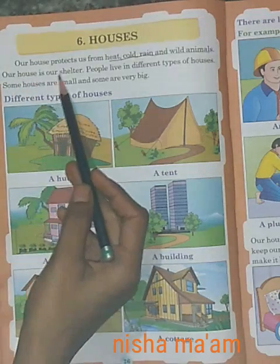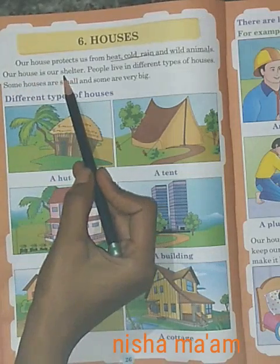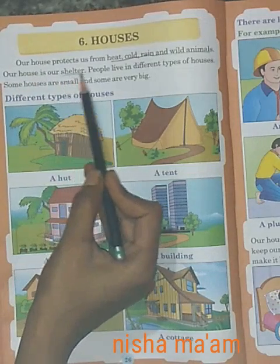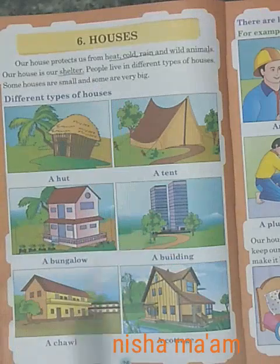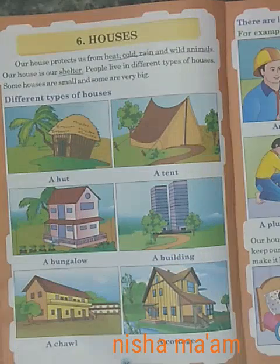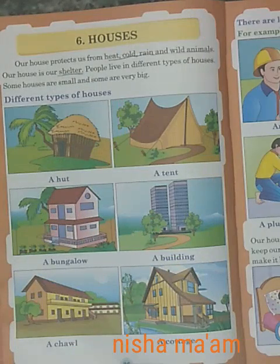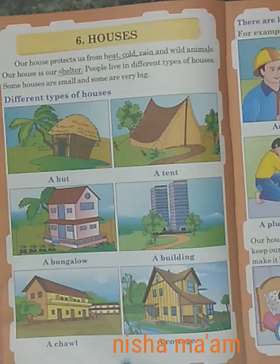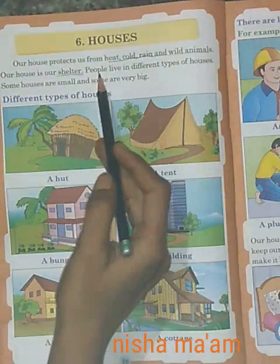Our house is our shelter. हमारा घर जो है, वो हमारा shelter है, हमें चाव देता है, हमारी मदद करता है, हमारी रक्षा भी करता है।